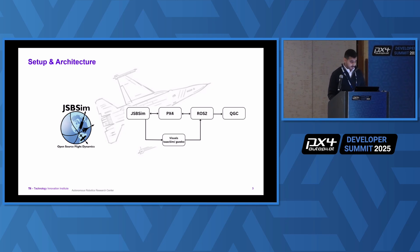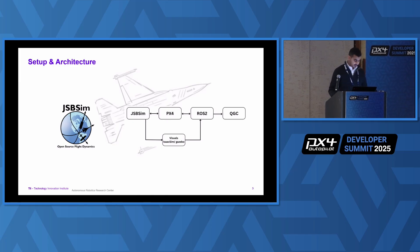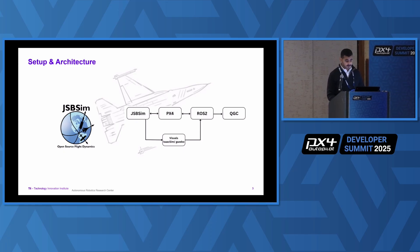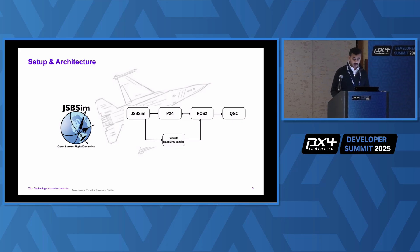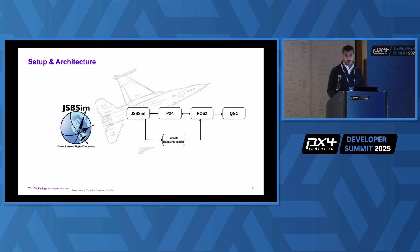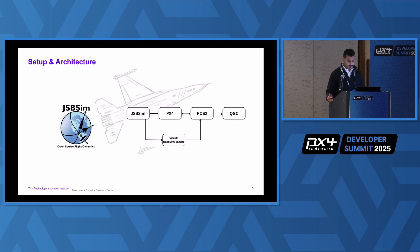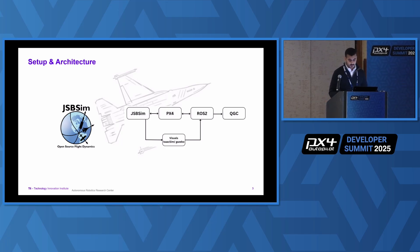In my setup, I used F-16 JSBSim — an open-source flight dynamics engine that simulates how the aircraft behaves in the air using real dynamics and real physics. For the simulator, I used our internal TII simulator. It has many blocks: JSBSim runs the flight physics — how the aircraft actually flies; PX4 runs the autopilot, reads the simulated sensors, and sends control commands; ROS2 is the communication layer between PX4 and ground control. We also have visuals using ISXM and Gazebo, though I didn't use the visual component — I mentioned it because it's part of the full architecture.